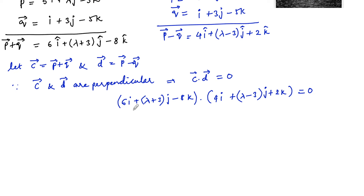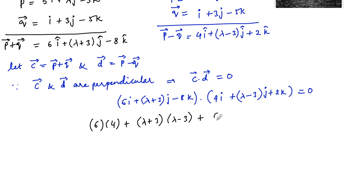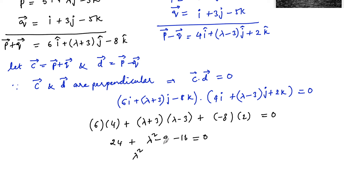Simplifying the dot product by taking scalar components respectively: 6 times 4 plus (λ+3)(λ-3) plus (-8)(2) equals 0. That is 24 plus λ² minus 9 minus 16 equals 0, or λ² plus 24 minus 25 equals 0, giving λ² minus 1 equals 0.